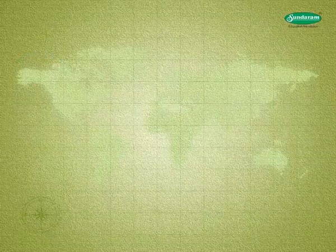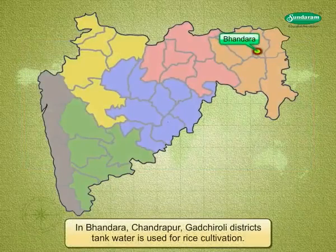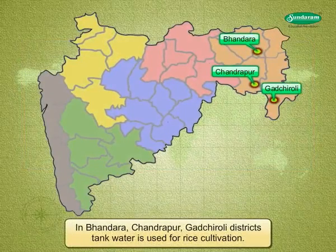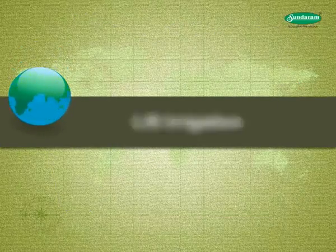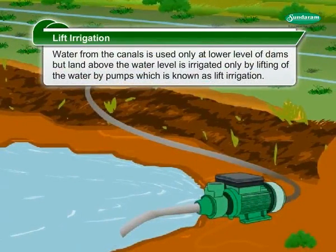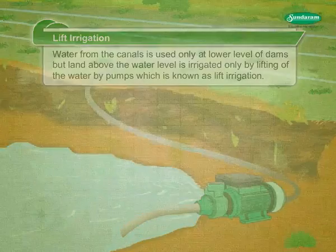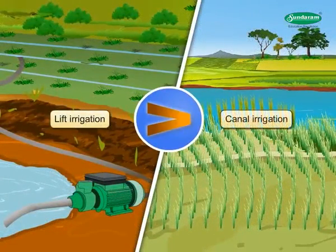Tank irrigation: Water from the tank is used for irrigation. In Bhandara, Chandrapur, and Garchiroli districts, tank water is used for rice cultivation. Lift irrigation: Water from the canals is used only at the lower level of dams, but land above the water level is irrigated by lifting water using pumps, which is known as lift irrigation. This method of irrigation is costlier than canal irrigation.